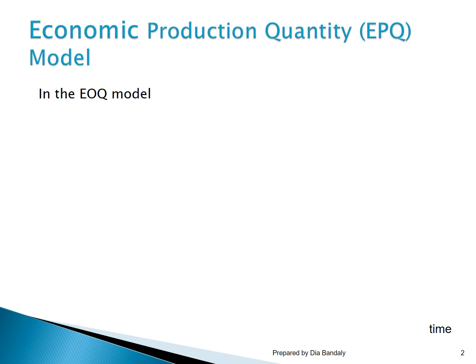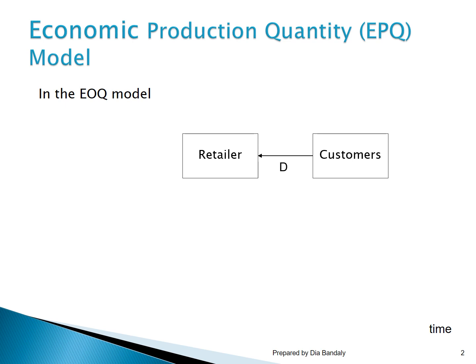Let's remember what we discussed in the EOQ model. The context of the EOQ model is that we have a retailer who faces a demand from his customers — an annual demand that we usually denote as capital D. For example, this annual demand can be 12,000 units per year. This retailer, in order to satisfy this demand, has to order the items from his suppliers.